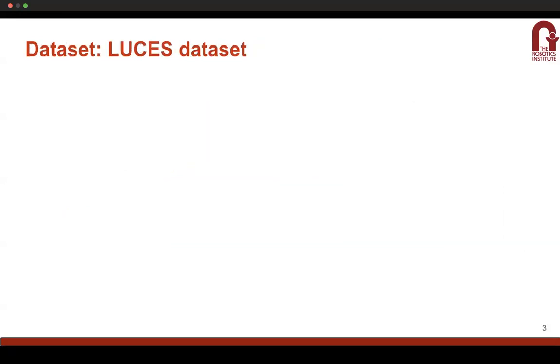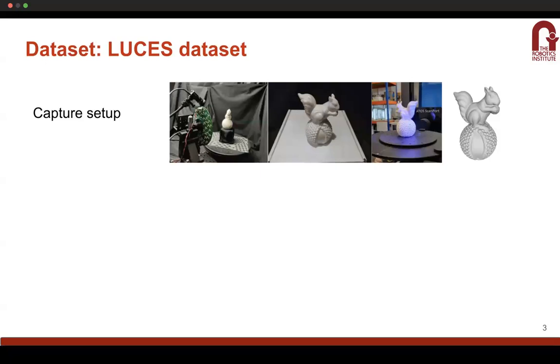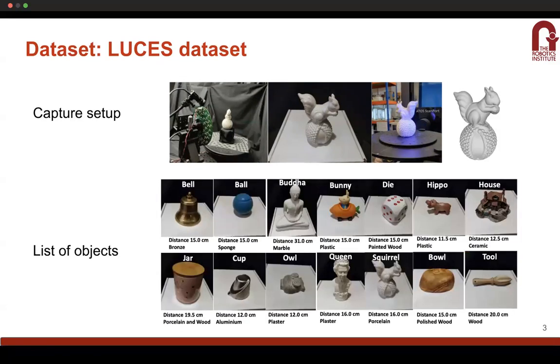We use the LUCES dataset, which is one of the first real world near field photometric stereo datasets wherein the objects are captured using this setup. As we can see, the light sources and the objects are much closer to each other. These are some of the sample images from the dataset as well as the 3D ground truth reconstruction. This dataset supports 14 such objects which have been captured under 52 light source positions, and we use this for testing our approach.